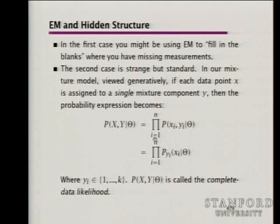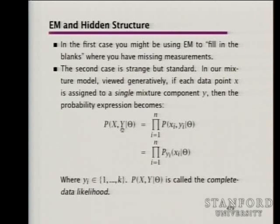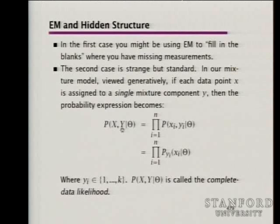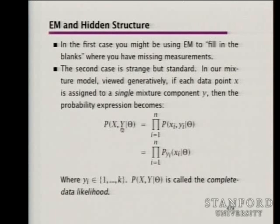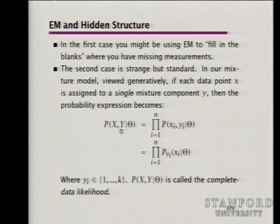Our complete data says: for the n-gram model, there are the actual words we can observe, and secondly there are these Y choices — was this data point generated by the trigram model, the bigram model, or the unigram model? The generative model corresponding to our mixture model is: when you want to generate the next word, you first roll your dice to see whether to generate from the trigram, bigram, or unigram component models, then having chosen one, you roll the dice again and choose a particular word. The Y variables have values one, two, three for those three models.